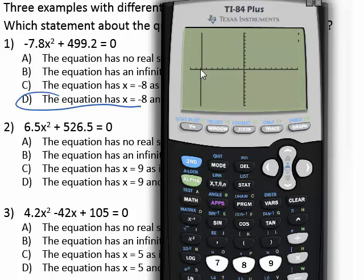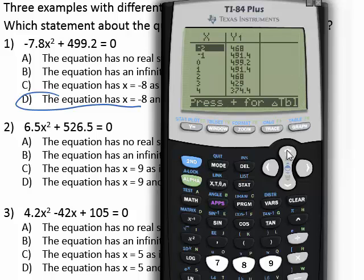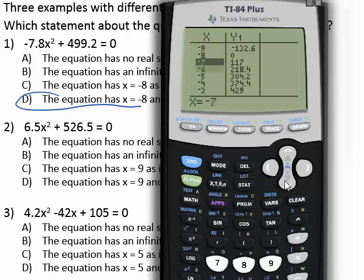And it looks like the line is going to hit 0 at negative 8 and positive 8. You can also check that on your table by going second graph. And you can scroll up. Notice negative 8 hits 0 which the equation should be equal to 0. And we scroll the other direction. Positive 8 equals 0.